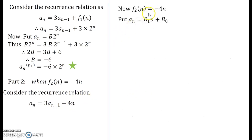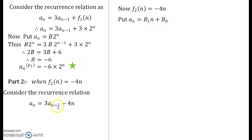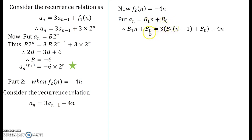The substitution that works for this part is a_n equals b1·n plus b0. While substituting in the recurrence relation, wherever you see a_n replace it by b1·n + b0, and wherever you see a_{n-1}, replace it by b1·(n-1) + b0. Substituting gives this equation. Now solve further.